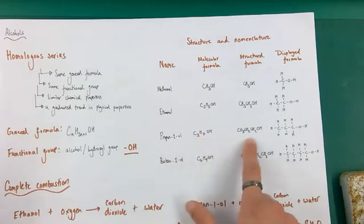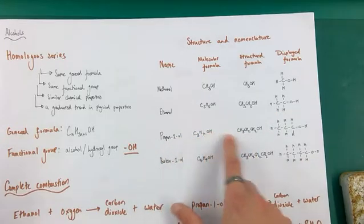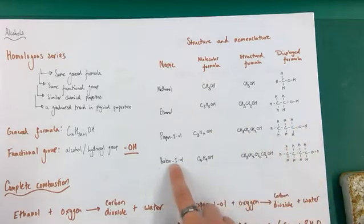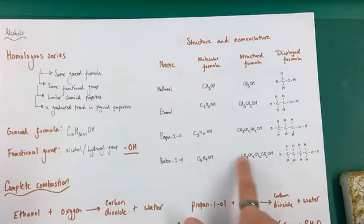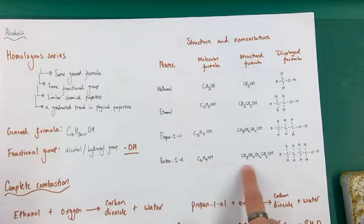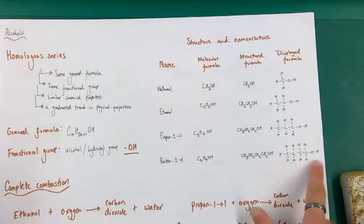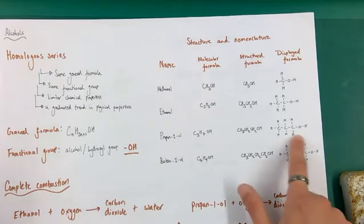Propan-1-ol, three carbons in length, the rest being surrounded by hydrogens with the OH at the end, as shown by the structural formula and the displayed formula. And finally, butan-1-ol. Here is my molecular formula, four carbons with the but. Here's my structural formula with the arrangement of the hydrogen shown, and here's the displayed formula with the greatest detail and all the bonding shown.